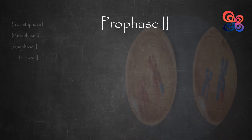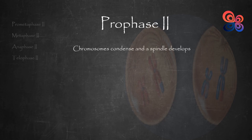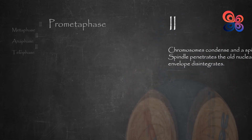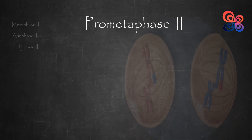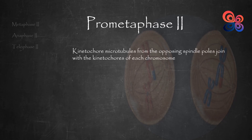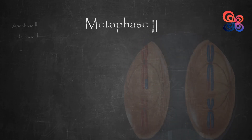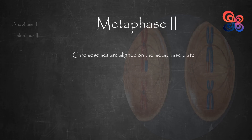The chromosomes condense and the spindle develops in prophase 2. The spindle penetrates the old nuclear area when the nuclear envelope disintegrates. In prometaphase 2, kinetochore microtubules from the opposing spindle poles join with the kinetochores of each chromosome. The chromosomes are aligned on the metaphase plate in metaphase 2, thanks to the motions of the spindle microtubules.